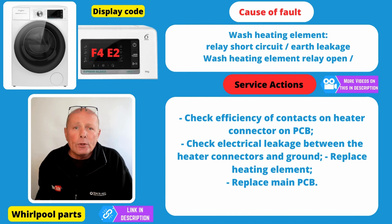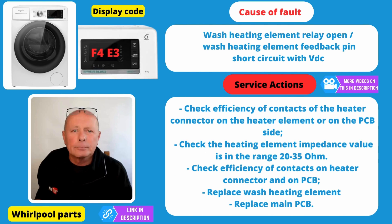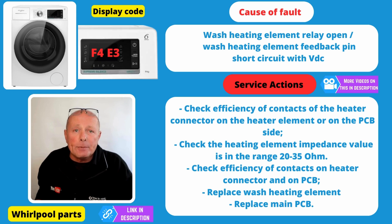F4E2 Error Code is to do with the heating system again, but this time they're suggesting it may be the NTC sensor or the wiring going from the circuit board to the NTC sensor, or you may have an earthing problem. Check the continuity on the wires going between the circuit board and the NTC sensor and make sure the NTC sensor is working correctly. You may also have a problem with the actual relay on the board itself. Error Code F4E3 is also to do with the heating system. Basic checks need to be done on the wiring, the element and the circuit board connections. Also make sure that you do an ohms reading test on the element and follow the procedures that you can see on the screen here.